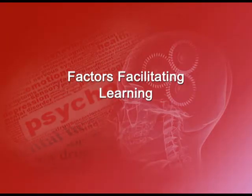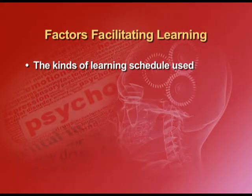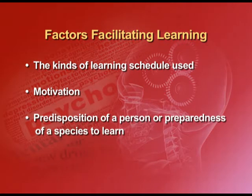What does this tell you? There are different factors that predispose a person — or an organism, for that matter — to acquire certain concepts, skills, and conditioning learning abilities. And also, there are different learners who interact in different ways with the learning styles. Psychologists, with immense research and a lot of laboratory experiments, have discovered three kinds of basic factors that facilitate learning: the kinds of learning schedules used, motivation, and predisposition or preparedness of a species to learn. Let us talk of them one by one.